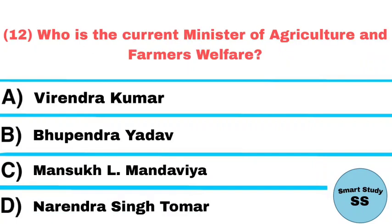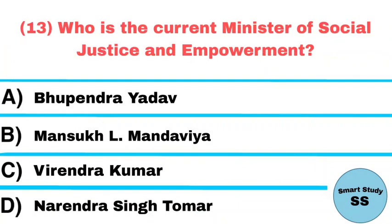Question number 12: Who is the current minister of Agriculture and Farmers Welfare? Answer: Narendra Singh Tomar. Question number 13: Who is the current minister of Social Justice and Empowerment? Answer: Virendra Kumar.